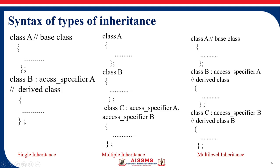How we write the inheritance: name of the derived class, then colon, then access specifier — also called visibility mode. It can be private, public, or protected, followed by the name of the class from which we want to derive. So this is the syntax for single inheritance: one base class and one derived class.